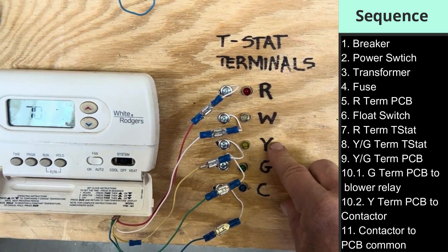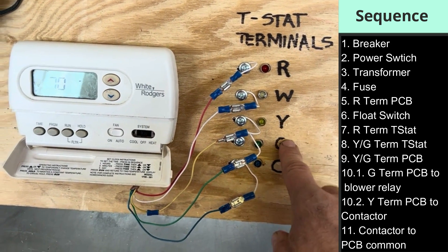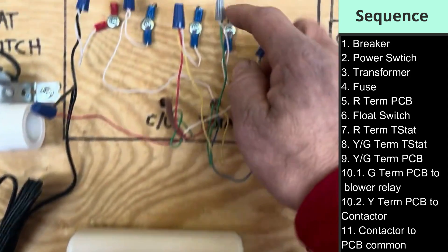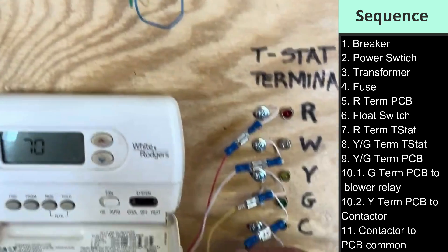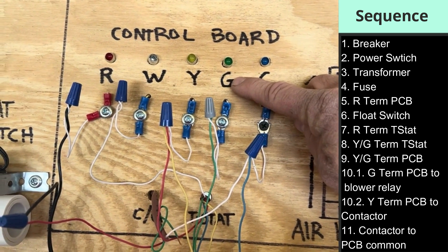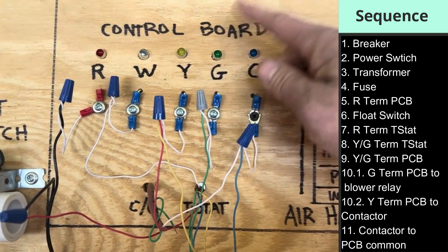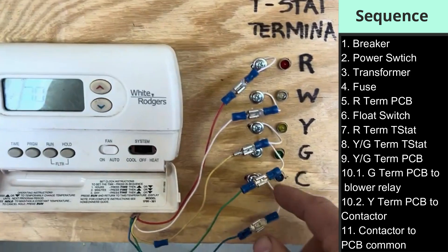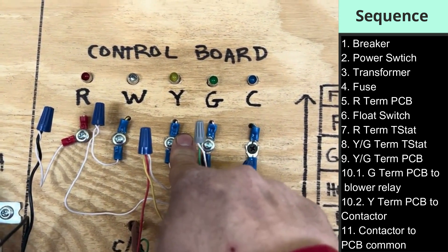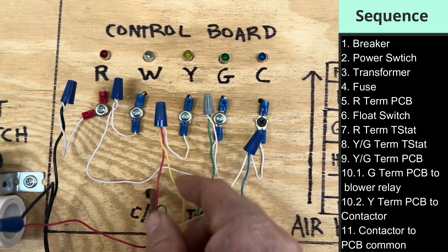In cooling mode, the thermostat makes connections between the R terminal and sends 24 volts to our Y terminal, and also sends 24 volts from R to G — Y is for cooling, G is for our blower motor. Both of these terminals get powered at the same time in cooling mode. The Y goes back on a yellow wire to the control board Y terminal, and G on a green wire back to the control board G terminal. Not every system has a printed circuit board with a Y terminal — sometimes you have a fan relay board — but either way the 24 volts from Y will connect to the Y terminal on the control board or pass through to the contactor on the outdoor unit.